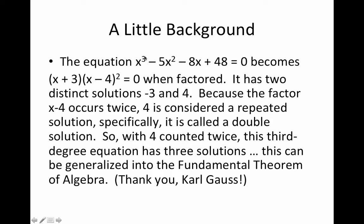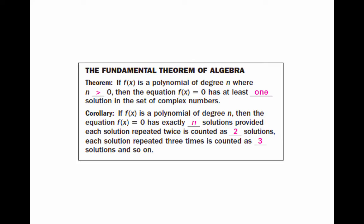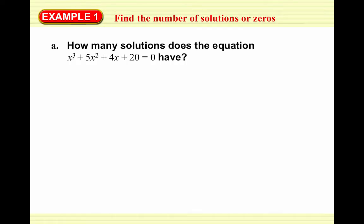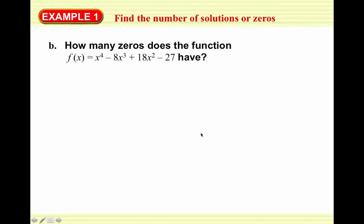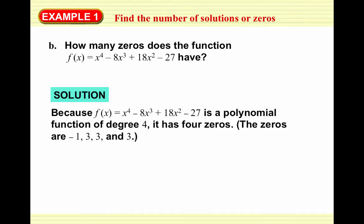This can be generalized into the Fundamental Theorem of Algebra, established by Karl Gauss. If a polynomial of degree n exists, there is at least one solution in the set of complex numbers. Further, if the degree is n, there are exactly n solutions, provided that solutions from two matching factors are counted twice, three matching factors counted three times, and so on. For example, x³ + 5x² + 4x + 20 = 0 has 3 solutions: -5, -2i, and 2i. And x⁴ - 8x³ + 18x² - 27 has 4 zeros: -1, 3, 3, and 3 — so 3 is a triple zero.